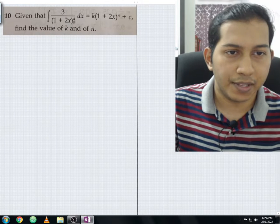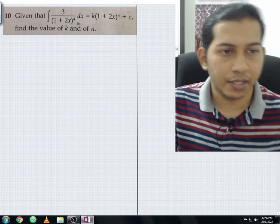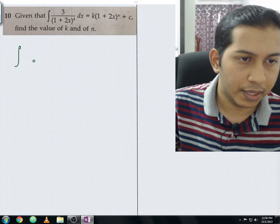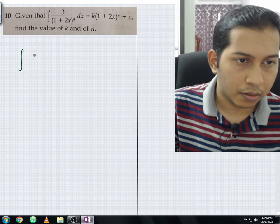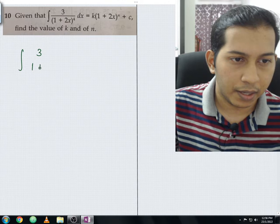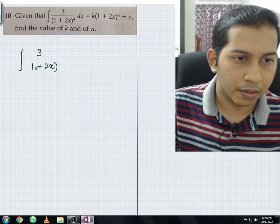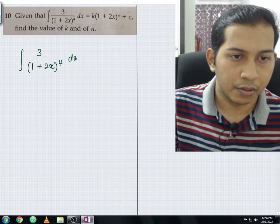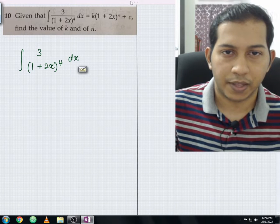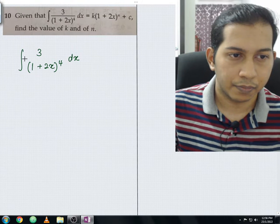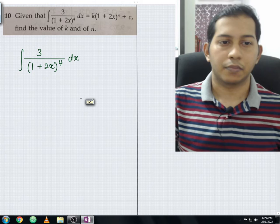To start off, what I'm going to do is copy down this integration equation into our working. So from here, integral 3 divided by (1+2x) to the power of 4 with respect to dx. Let me underline the fraction.